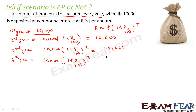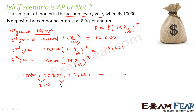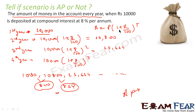The series is: 10,000; 10,800; 11,664; and so on. The difference between the first and second terms is 800, and between the second and third is 864. The difference is not constant and is in fact growing, so we conclude this is NOT an AP.